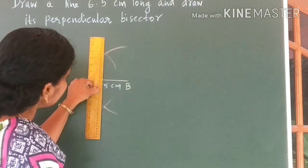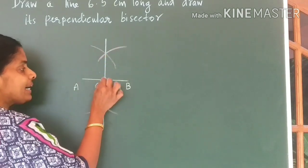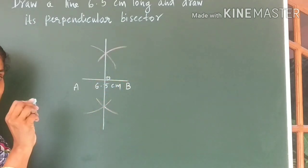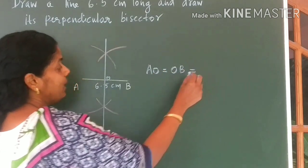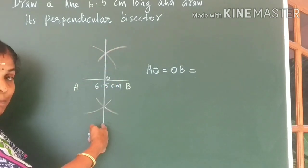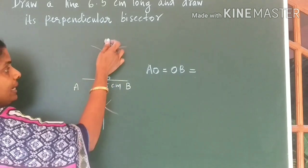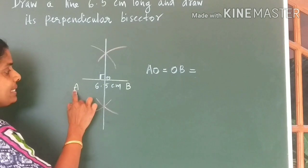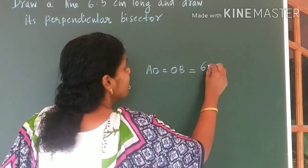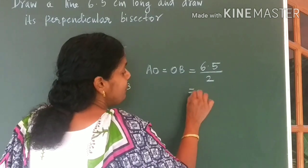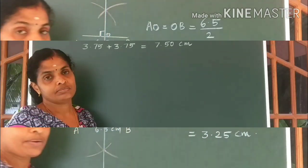Use your scale and join these two intersection points. The line joining the arcs cuts AB at a point — let us name that point O. You can say AO and OB will be equal because this line is the bisector. Also, the angle made here will always equal 90 degrees, so you can call this line the perpendicular bisector of AB. The measure of AO and OB will each be equal to 6.5 divided by 2, which is 3.25 centimeters.